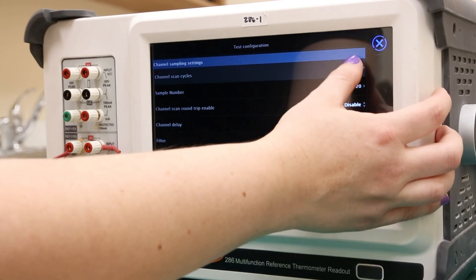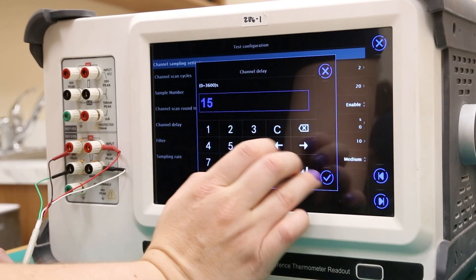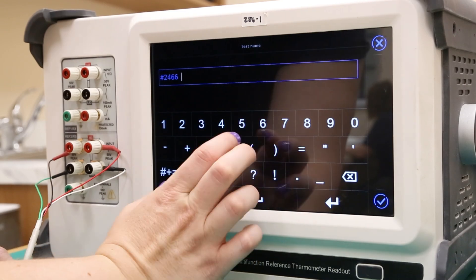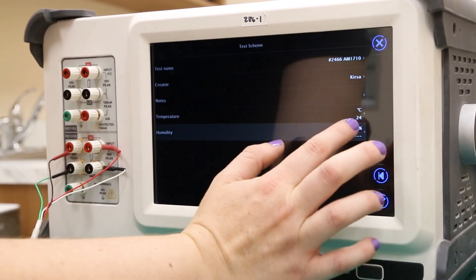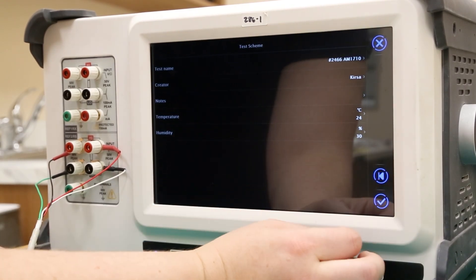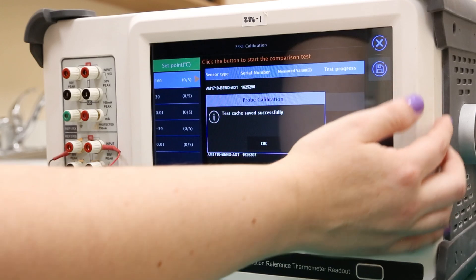On this screen, sampling and scan settings can be changed for the entire test. Finally, the test can be named and saved with relevant metadata. Press the check mark button, then the save button to save this newly configured test.